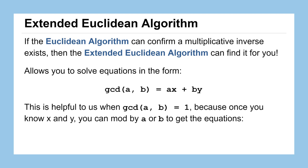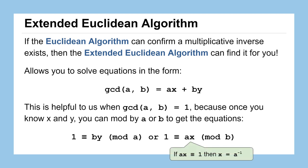When we find that the GCD of our two numbers is 1, and once we know x and y, we can mod by a or b to get congruence statements. Modding by a, the ax term vanishes and we get 1 ≡ by (mod a). Modding by b, the by term vanishes and we get 1 ≡ ax (mod b). If two numbers multiply together to give a congruency value of 1 in a particular modulus, those two numbers are multiplicative inverses — which is exactly what we're trying to find.